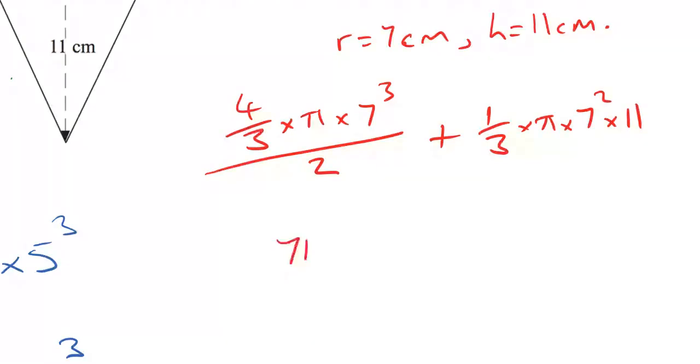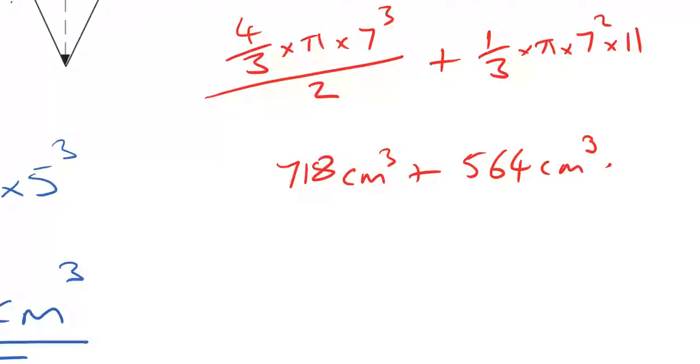That left hand piece is 718 centimeters cubed. The right hand piece, if I work that out, I am going to end up with 564 centimeters cubed. So if I add those two pieces together, I have a combined volume of 1,282 centimeters cubed.